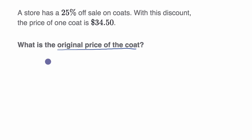Let's write it out the same way we did last time. So original price, and then there's a 25% discount. So minus 25% of the original price is going to equal $34.50. That's the price with the discount.